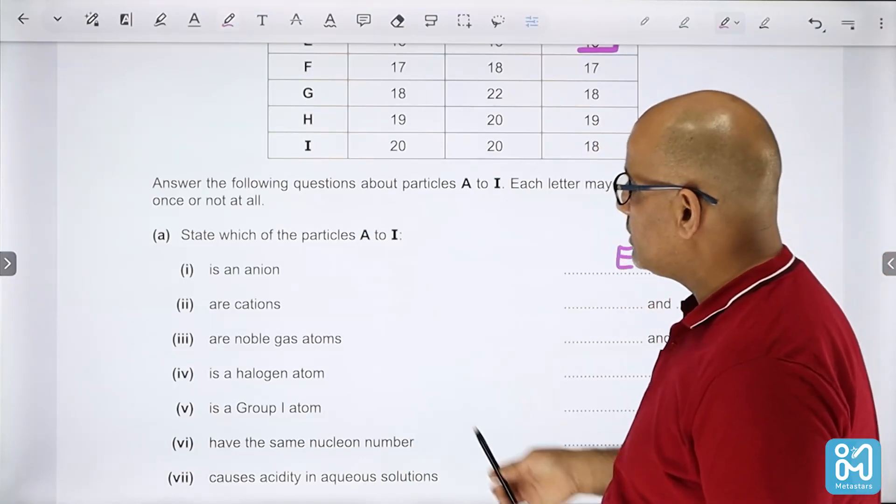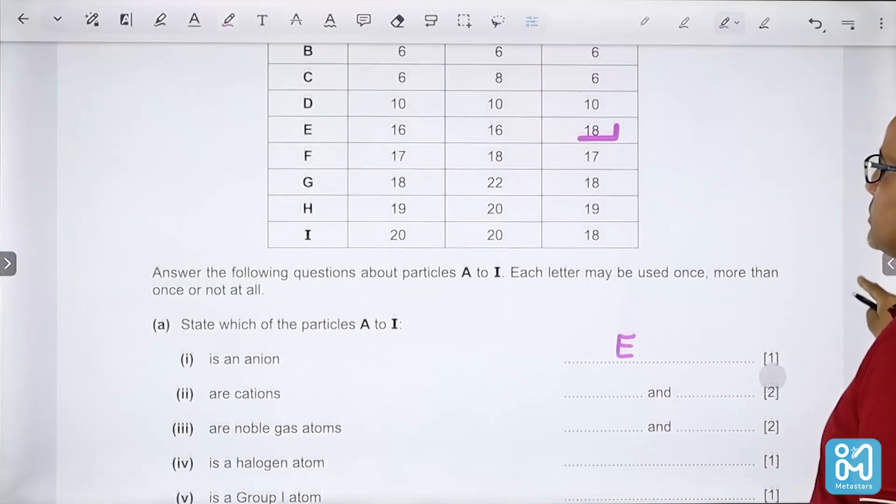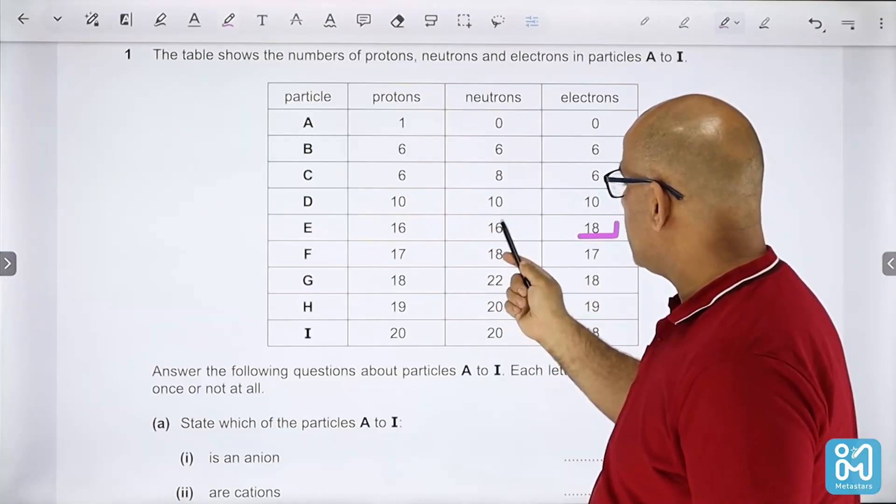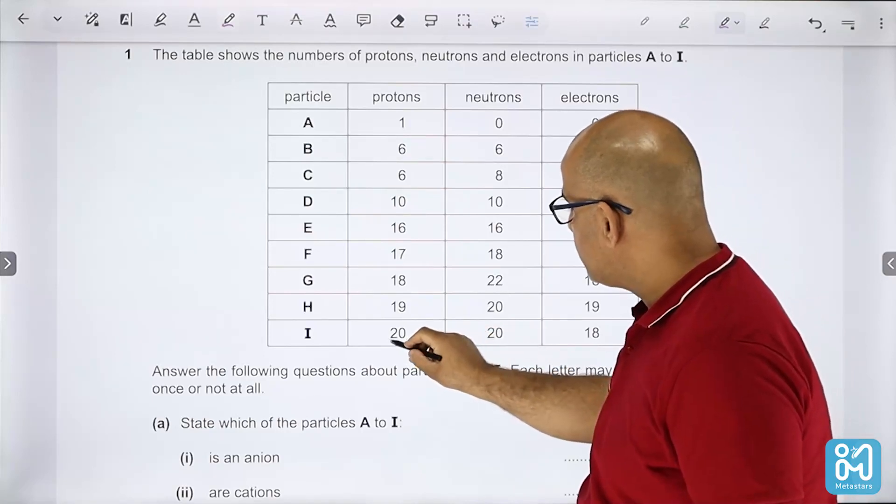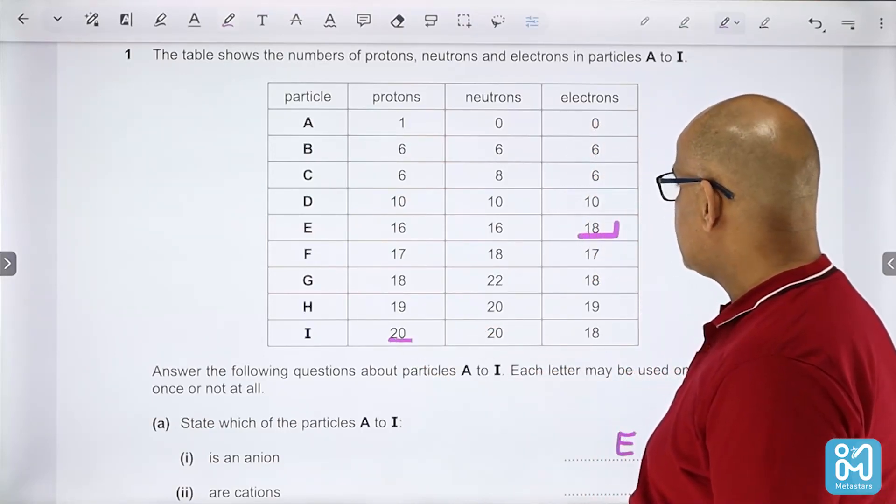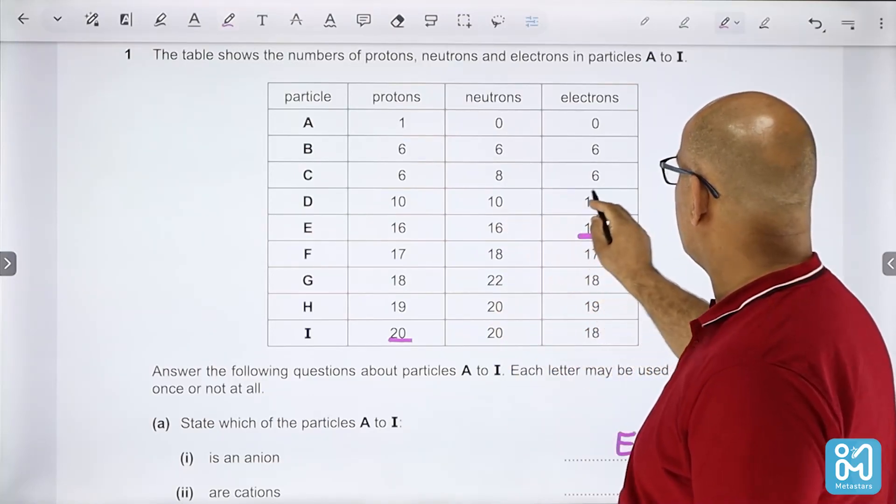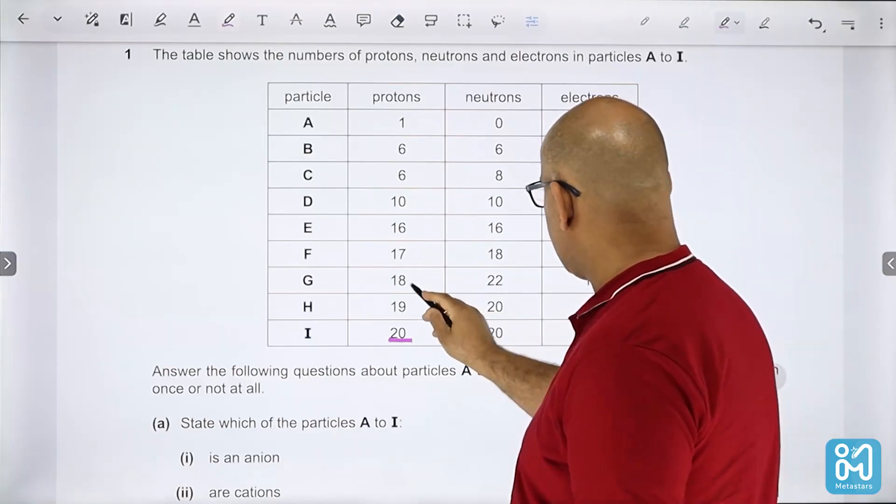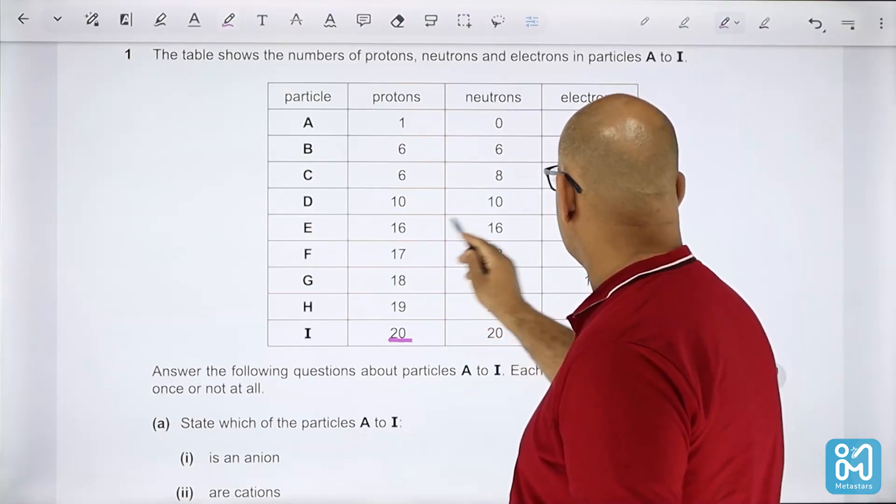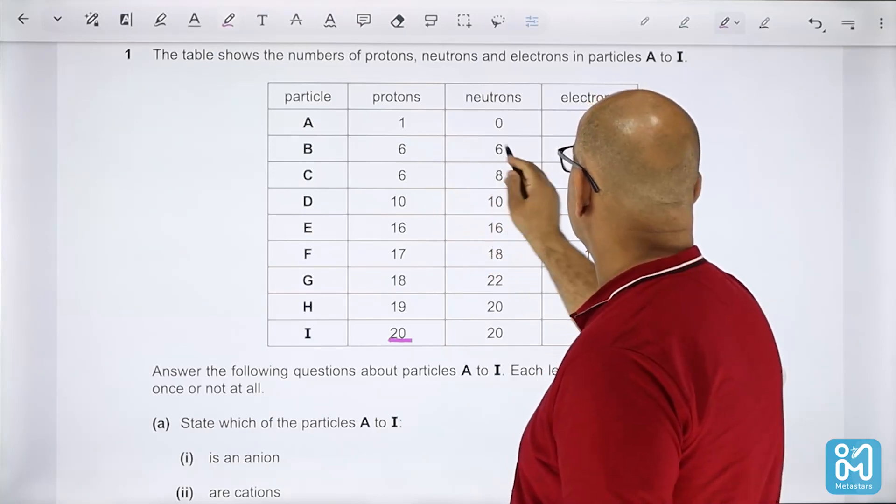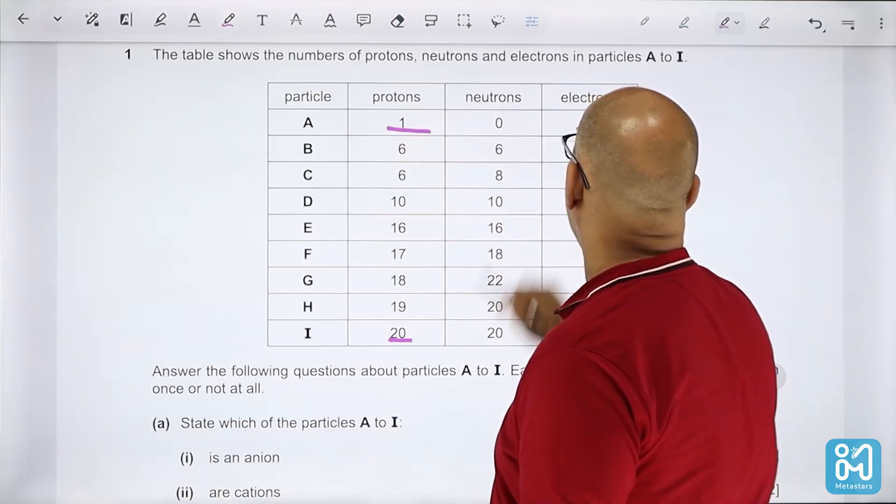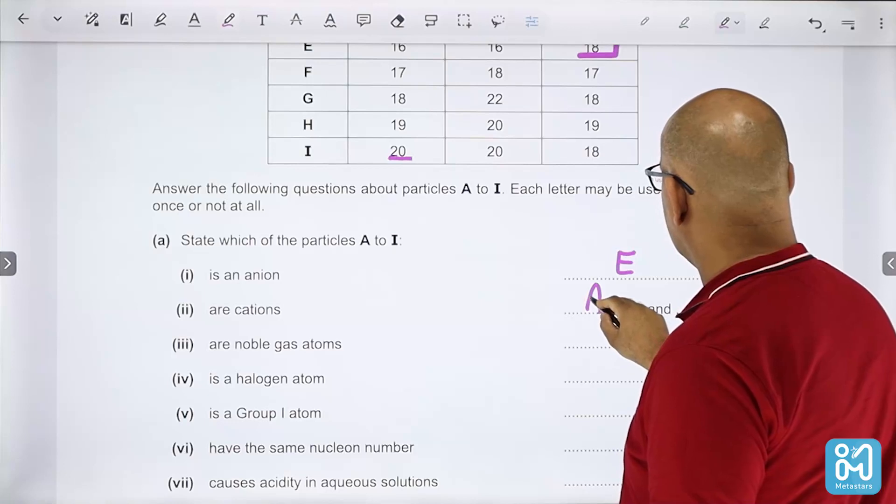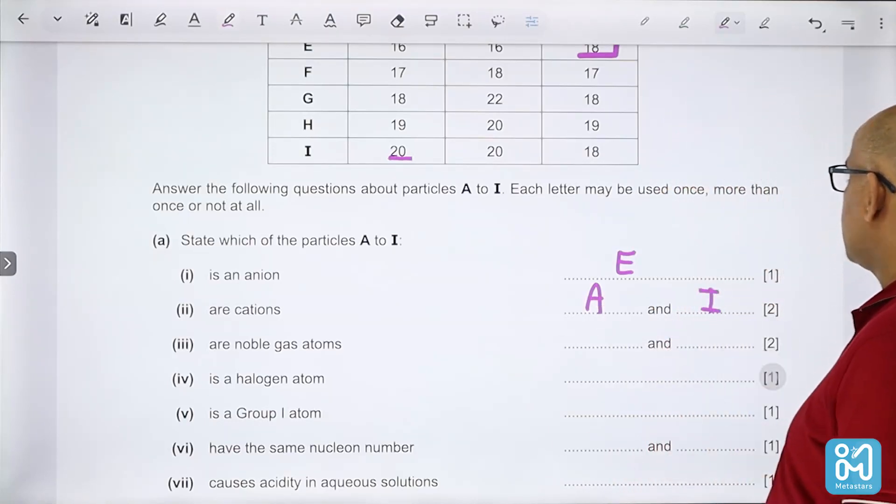For cations, you can see the protons are greater than electrons. For A and I, the protons are greater than electrons. So A and I are cations.